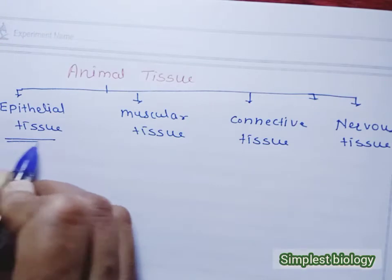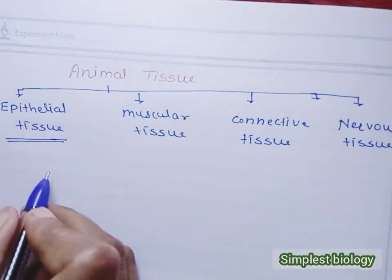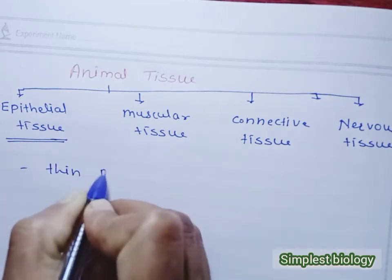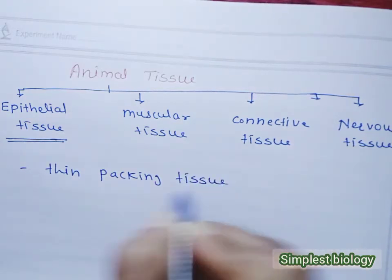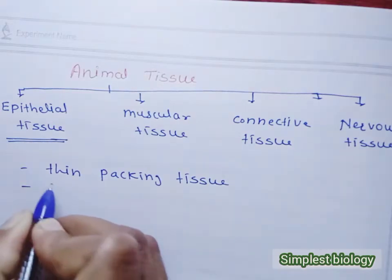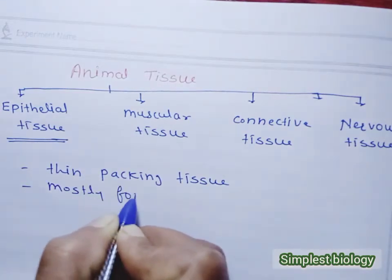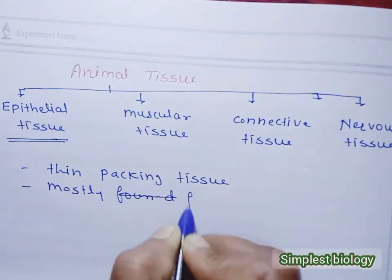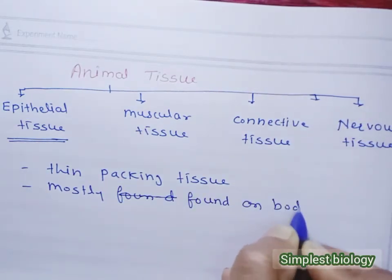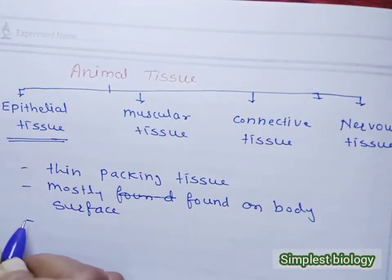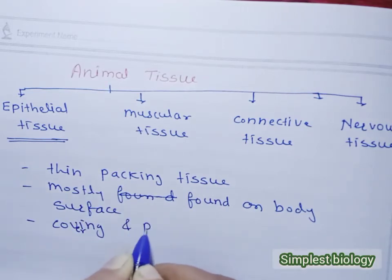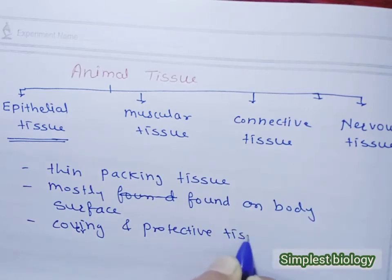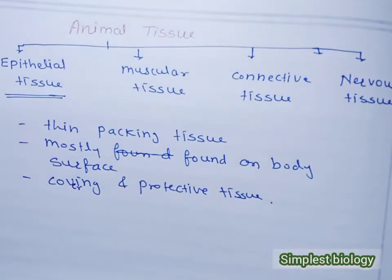In this video we will discuss epithelial tissue. Epithelial tissues are thin packing tissues. They are mainly spread all over the body, mostly found on body surfaces. These are covering and protective tissues.